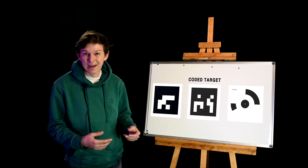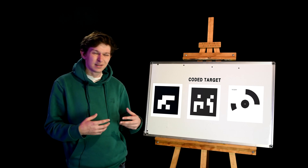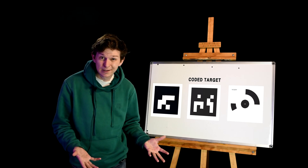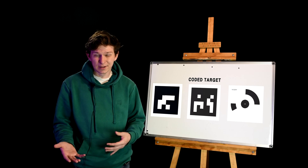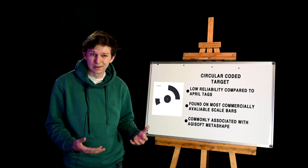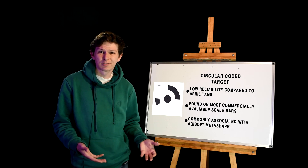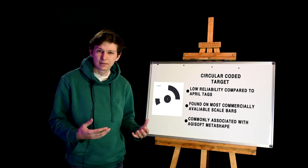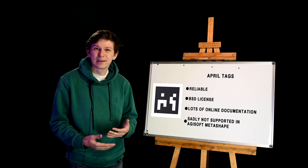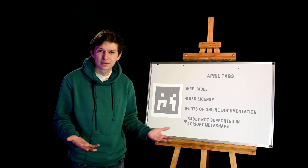In most cases there are different target types, and we'll briefly cover that later. Coded markers come in two main varieties that we use for photogrammetry. For the sake of simplicity, I'm going to be talking exclusively about April tags. However, circular coded targets exist — they are used primarily in a lot of commercial applications and they've got a lot of legacy with applications like Agisoft Metashape. These days I find it best to use April tags.